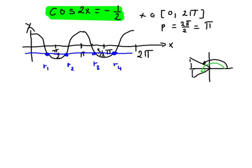So what I see on the graph, that there are two full cycles of cosine function.